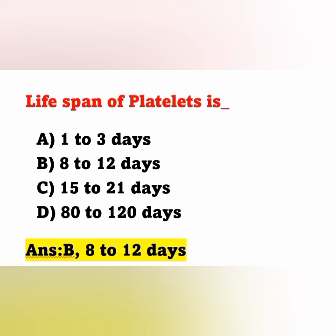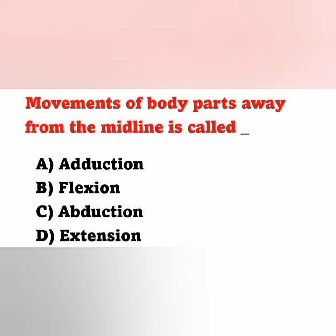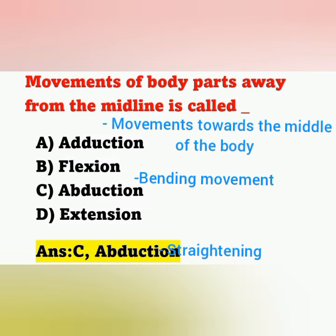Next question: movement of body parts away from the midline is called — options A: adduction, B: flexion, C: abduction, D: extension. The correct answer is option C, abduction. Adduction means movement towards the midline. Flexion is a bending movement, and extension means straightening of the hand or body parts.